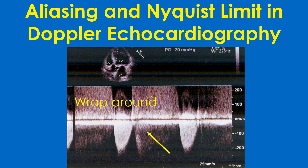The tracing can be depicted upwards to its full extent by adjusting the velocity limit or by shifting the baseline downwards. The dense jet seen below the baseline is the forward aortic flow, and the peak forward gradient is measured as 20 mmHg, which does not indicate significant aortic stenosis.